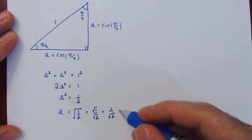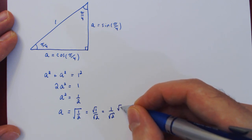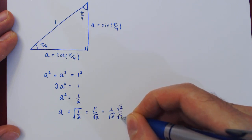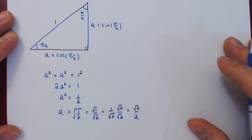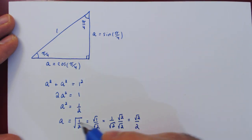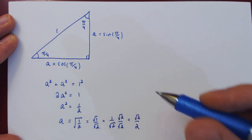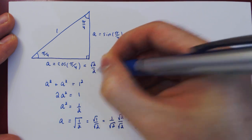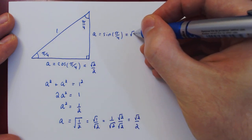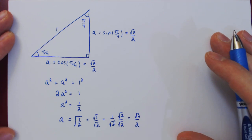So this is one possible answer, but we can also rationalize and obtain root of 2 over 2. So, since A is both cosine and sine of pi over 4, and A is root 2 over 2, then cosine of pi over 4 is root 2 over 2, and sine of pi over 4 is also root 2 over 2. And that's it!